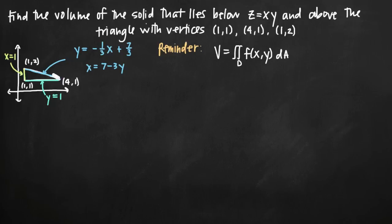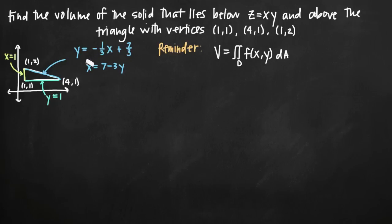In a problem like this we could choose to integrate with respect to x first or with respect to y first. Sometimes, and in this particular problem, the order of integration should be dictated by whichever order is easier. The lines x equals 1 and y equals 1 are simple, but comparing the two forms of the hypotenuse, x equals 7 minus 3y is clearly simpler. Because of that, we want to integrate with respect to x first.